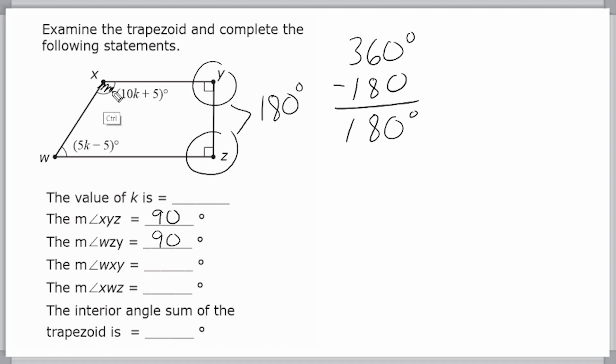But as you can see, one of these is obtuse, meaning greater than 90, and one of them is acute, meaning less than 90. But we do know that these together add up to be 180 degrees.